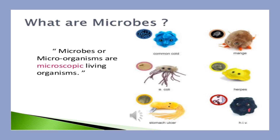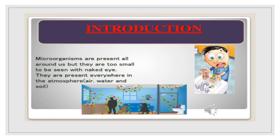First of all, we will discuss microbes. What are microbes? Microbes or microorganisms are microscopic living organisms. These are very tiny living things that can be seen with a microscope. Microorganisms are present all around us, but they are too small to be seen with the naked eye. They are present everywhere in the atmosphere, air, water, and soil.